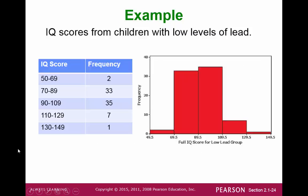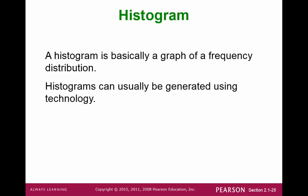In our example where we had the IQ scores from children, we can look at the values that we found for our boundaries that would separate each of these classes. The heights of these bars would represent the frequencies for each of those classes. So basically, a histogram is a direct translation of your frequency table.